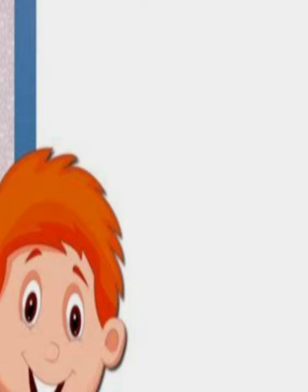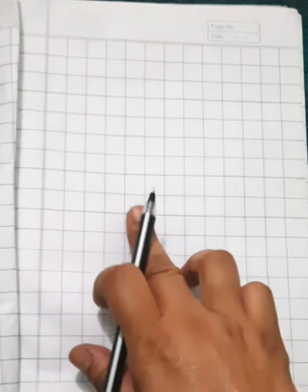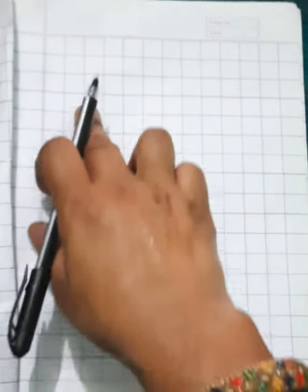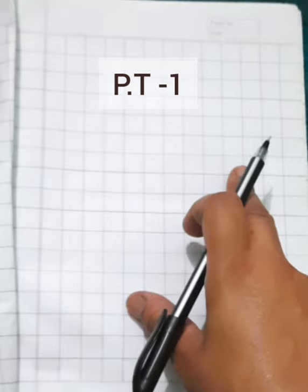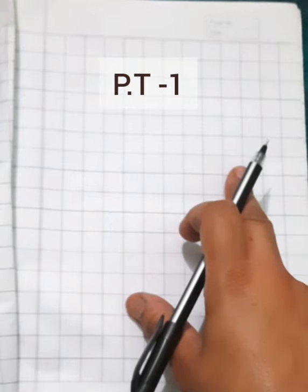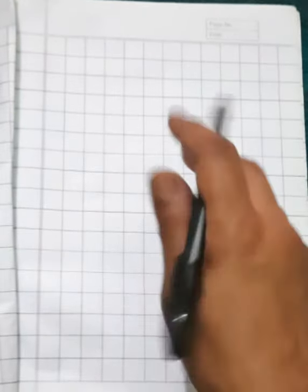So, open your notebook and take your pencil. On first page, you will write here PT1. On the next page, you will write date.